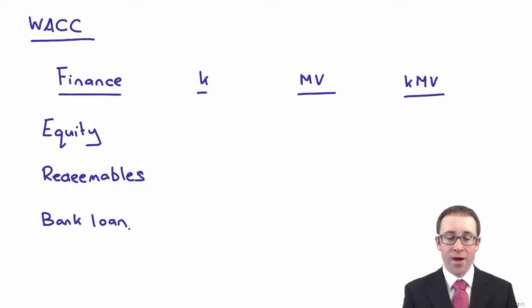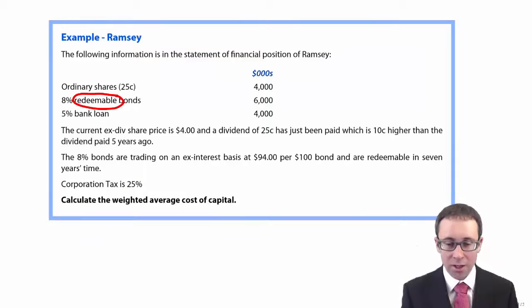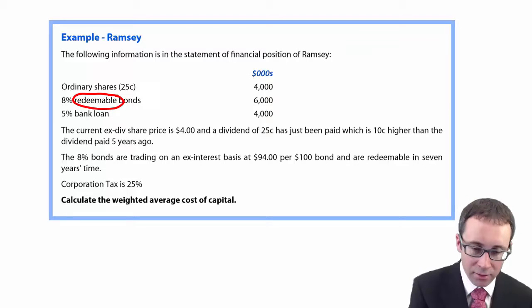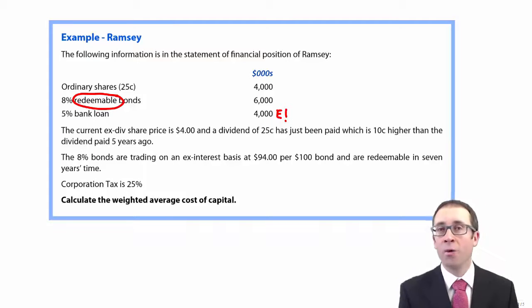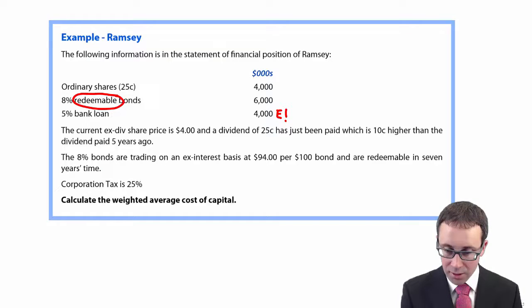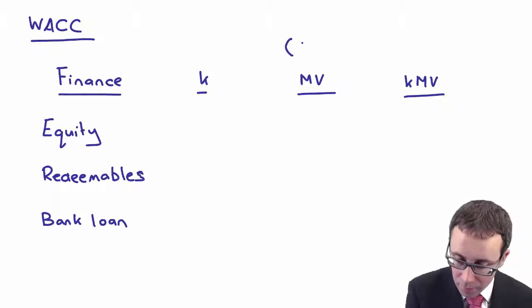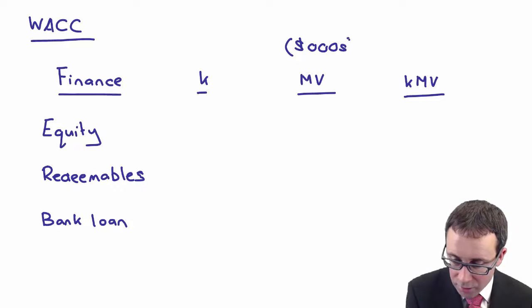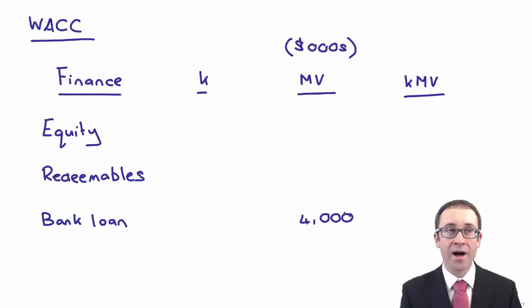What we need to go through and do then is work out the costs. First of all, it's normally easier to work out the market values as opposed to diving in and looking at the costs. So what have we got? Well, the easiest one of the lot is definitely the bank loan. So get to E with the exclamation mark there. Why? Because we just use the book value. So here we're looking at the market value in thousands of dollars, and the bank loan was there as 4,000. Excellent.